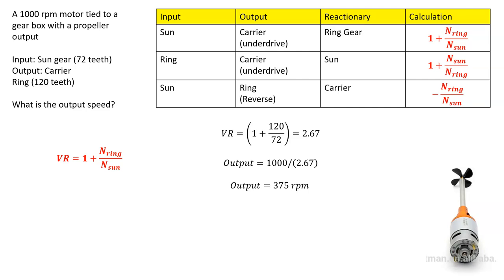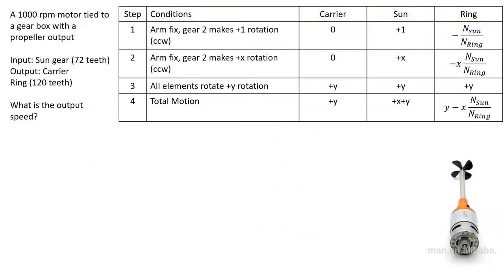So that is using the algebraic method. Your carrier is the output, and it's going to rotate at 375 — something less than 1,000 RPM, so it is stepping the RPM down. Now if we look at the tabular method, remember the real key is that the last row contains the equations we're ultimately going to use. Your input is the sun, your output is the carrier, and the ring is reactionary, so we're going to set that equation to 0 for the ring.